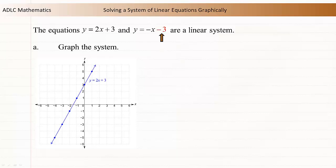The y-intercept of the graph of the second relation is negative 3, so plot the point. The graph of the second relation has a slope of negative 1, so count a rise of negative 1 for every run of 1 to plot the other points. Draw a line through these points. This is a graph of the system.